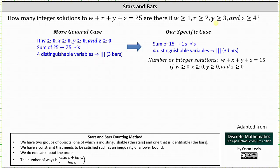So one approach would be to assign stars to the variables so the inequalities are met. For example, we assign one star to w so that w is greater than or equal to one. We assign two stars to x so that x is greater than or equal to two. We assign three stars to y so that y is greater than or equal to three. And we assign four stars to z so that z is greater than or equal to four. If we assign one, two, three, and four stars, that's a sum of 10 stars, and we only have 15 stars remaining to assign to the four variables, giving us 15 stars and three bars.